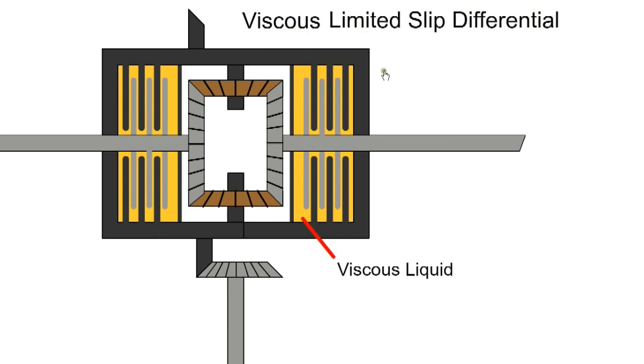When the car travels in a straight line, both sets of plates rotate together. If one wheel slips, the plates will rotate at different speeds. The viscous fluid will allow slow relative movements of the shafts during cornering, but will oppose a high-speed difference with a slipping wheel. This type of LSD is activated by a difference in speed between the plates.